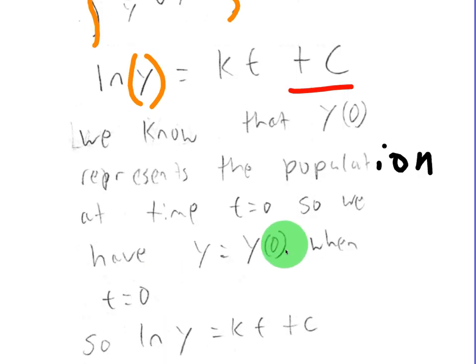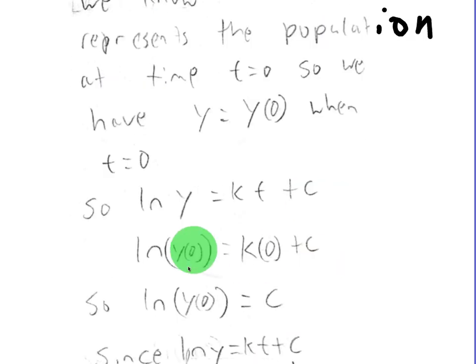So we have y equals y naught when t is 0. So y of 0 just means the initial population or the initial amount. So this is an initial condition that we can plug into our formula. So since we had natural log of y is equal to kt plus C, we can plug in y naught for our initial conditions.